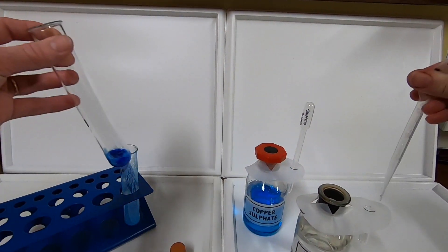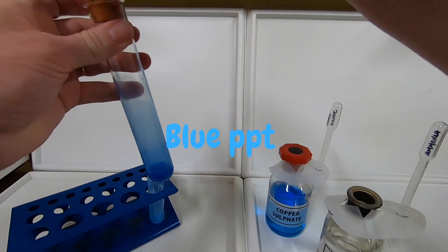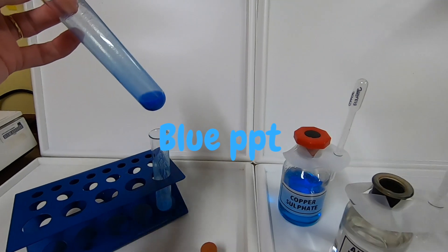We're going to repeat the practical. This time, again adding a few drops, we will see the blue precipitate of copper hydroxide form.